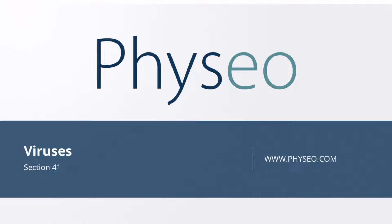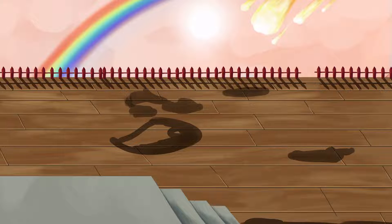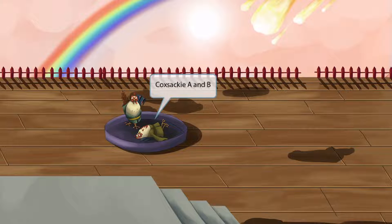Welcome to section 41 of the viruses. This is our virus overview figure, and in this video we'll be discussing Coxsackie A and B. Our Coxsackie story takes place in a little arena under the Peacock Emperor's rule — here's the arena, currently housing a cockfight, a battle of two roosters. Cockfight sounds like Coxsackie, for Coxsackie A and B.